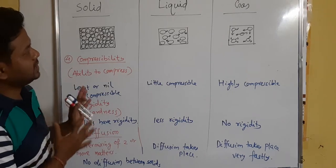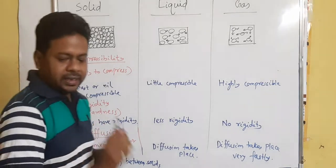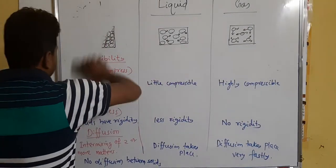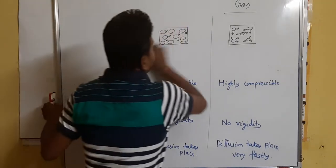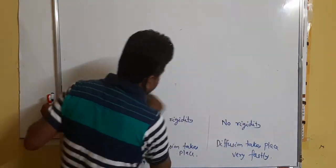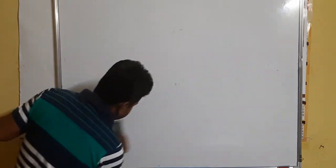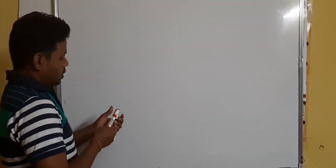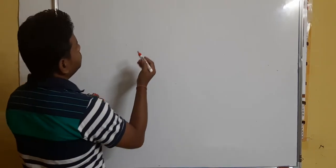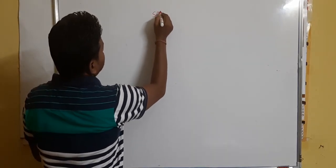So these are the differences between the characteristics of solid state, liquid state, and gaseous state. Now we will move to the next section of this chapter — that is the interconversion of states of matter. Different states can be interconverted, meaning they can be changed into one another, for example solid to liquid and liquid to gas.